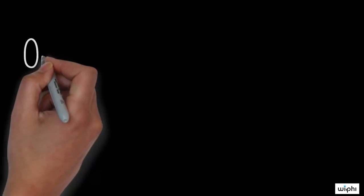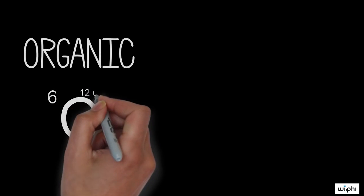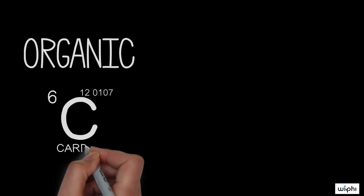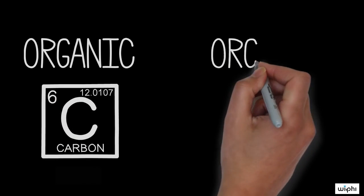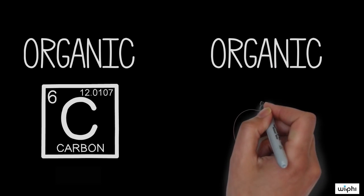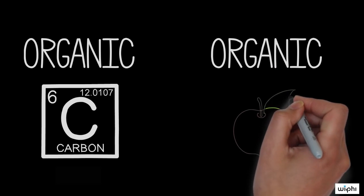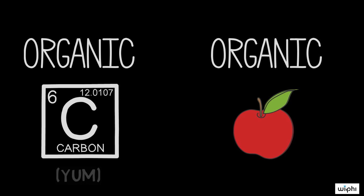Here's another example. Suppose your friend tells you this: organic compounds contain carbon, and organic foods are better for the environment. So when you're grocery shopping, you should look for food that contains carbon in it, as these foods are better for the environment.